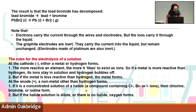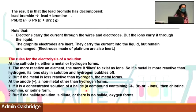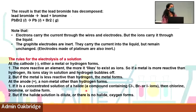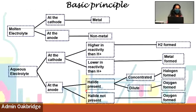If the halide solution is dilute, oxygen will be formed instead of the halogen. Concentrated means the halogen concentration is very high and strong, so halogen is discharged. In a diluted solution, the halogen ions are very low in number and weak, so they don't sacrifice themselves - instead, oxygen is discharged. If no halide is present at all, oxygen gas is always formed at the anode.